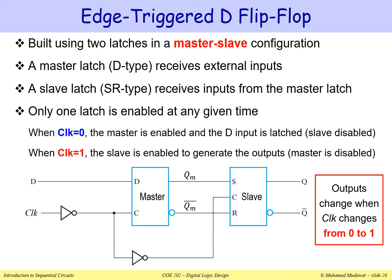We can implement a flip-flop using two latches. The first latch is called the master latch and the second is called the slave latch. The master is a D-type latch, whereas the slave is an SR-type latch. The trick is to enable only one of them at any given point in time — if one is enabled, the other must be disabled.